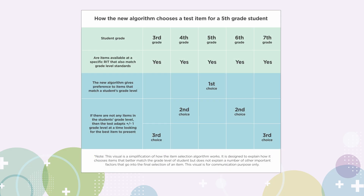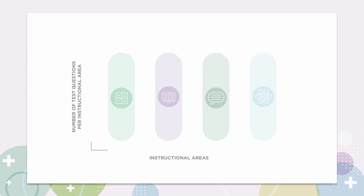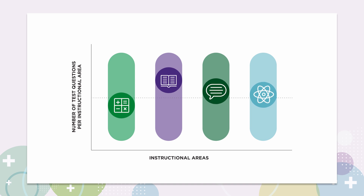The new algorithm provides two unique benefits that help make MAP Growth even better at assessing students. First, the new item selection algorithm is designed to have a preference for on-grade material. This means that students taking these new tests will be better measured against the core instruction they receive, increasing MAP Growth's market-leading test validity. Second, it also allows NWEA test creators to adjust the number of questions students see within each instructional area, asking students more questions based on your state's priority grade level standards. The introduction and continued rollout of tests using the enhanced item selection algorithm is just one of many steps we are taking to enhance the accuracy and reliability of MAP Growth. And there's much more to come.